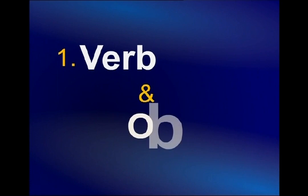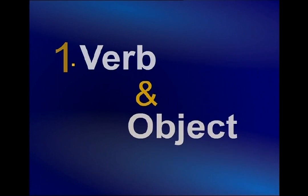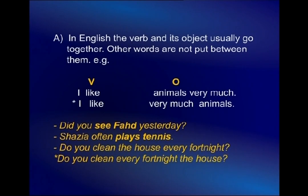The first topic is the use of verb and its object in English. The verb and its object usually go together — other words are not put between them. For example, in the sentence 'I like animals very much,' you will always have 'like' followed by the object. If you were to say 'I like very much animals,' that would not be correct — 'very much' has to come after the object.